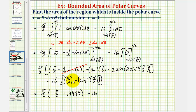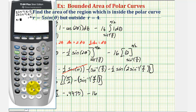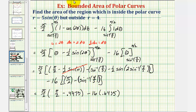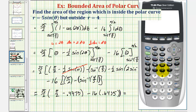Then we have minus 16 times the difference. For the 16 term, we compute pi over two minus inverse sine of four-fifths, which is approximately 0.6435. Going back to the calculator: 25 halves times the quantity pi over two minus 0.4473, minus 16 times 0.6435. The area is approximately 3.7477 square units.